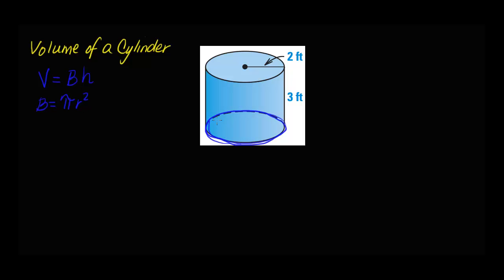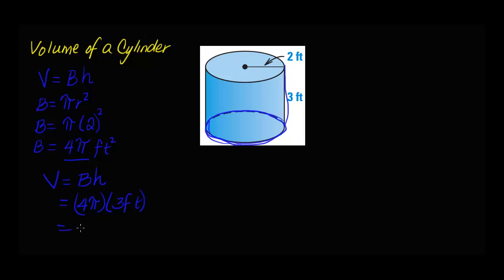Pi r squared is the area of a circle. So to find the area of a circle, all we need is the radius. The radius here is 2 feet. So it's going to be 2 squared, and that equals 4 pi — that is the area of the base in square feet. Now to find the volume, I'm going to take that area and multiply it times the height of the cylinder, which is 3 feet. So that's going to equal 12 pi cubic feet, and with your calculator you can approximate this to 38 cubic feet. There's your answer for volume of a cylinder.